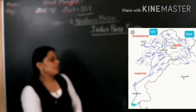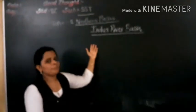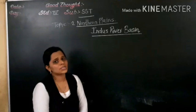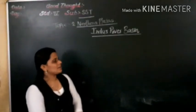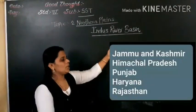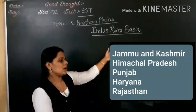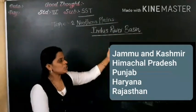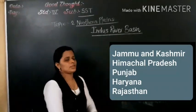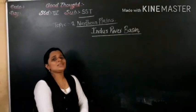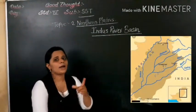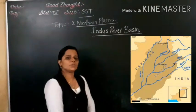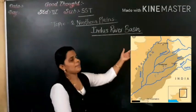Within India, this Indus river flows through the states of Jammu and Kashmir, Himachal Pradesh, Punjab, Haryana, and Rajasthan. Now Punjab — this name was given because of the river's five tributaries. 'Panch' means five, and 'Aab' means water. So because of the five tributaries, the state got its name: Punjab.